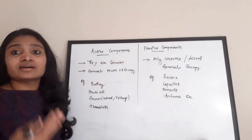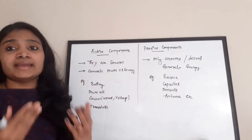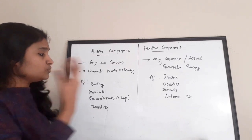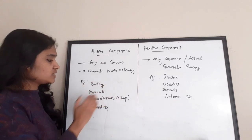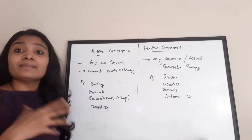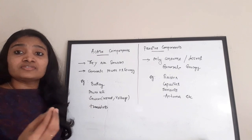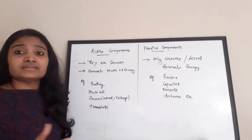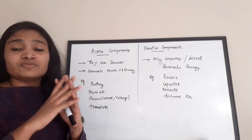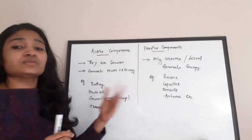So active components are generally sources — voltage and current sources — and they generate power or energy. Examples include battery, power cell, sources such as voltage and current sources, and transistors, which amplify the signal. These are some examples of active components. There is a wide variety of examples if you search further.